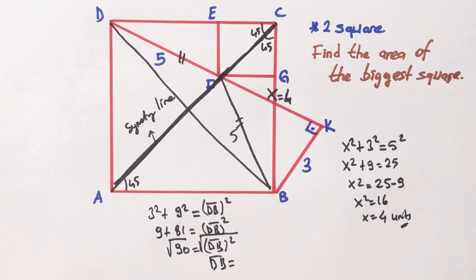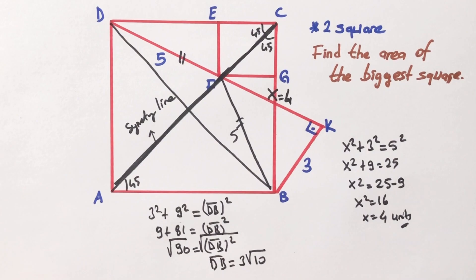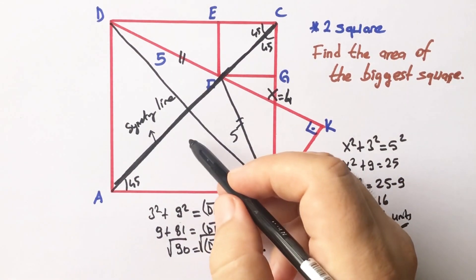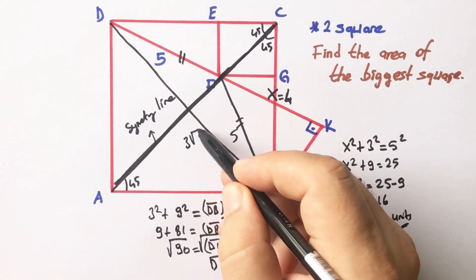DB is going to be 3 root 10 units. Okay, length of the DB is equal to 3 root 10.